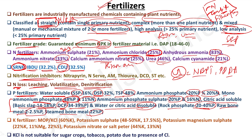Water and citric acid-insoluble phosphatic fertilizers include rock phosphate (20–40% P) and raw bone meal (2–2.5% P), steamed bone meal (22% P). Water-soluble phosphatic fertilizers are used for short-duration crops in saline to neutral soils. Citric acid-soluble and insoluble types are used for long-duration crops in acidic soils.